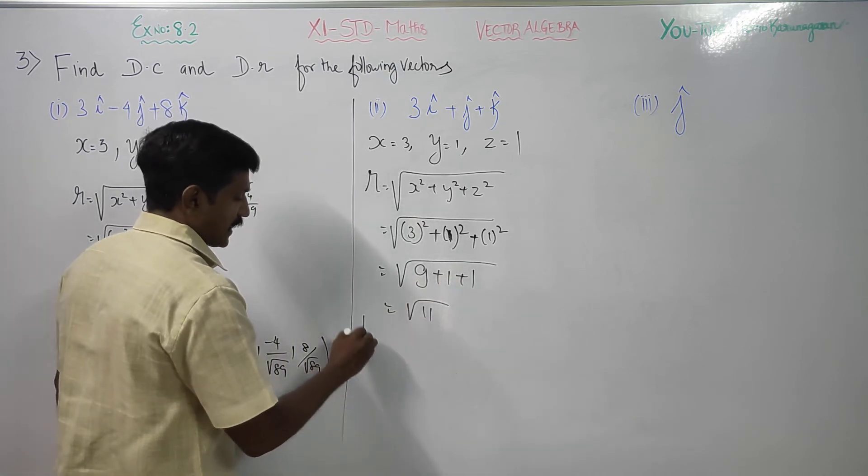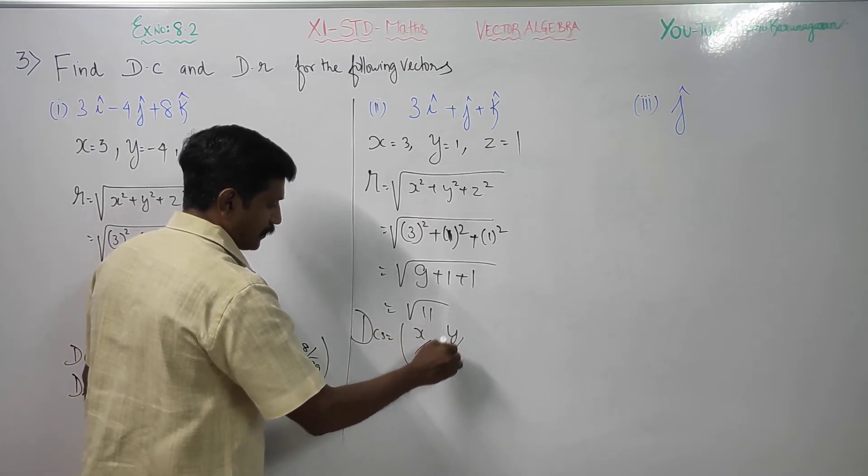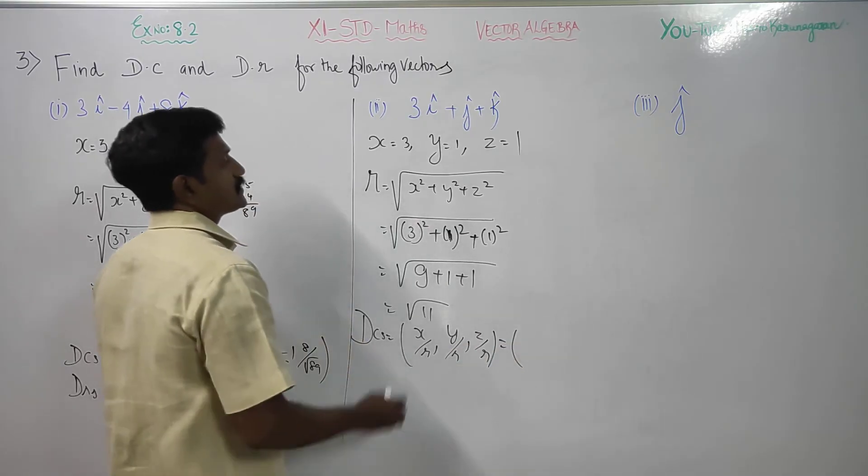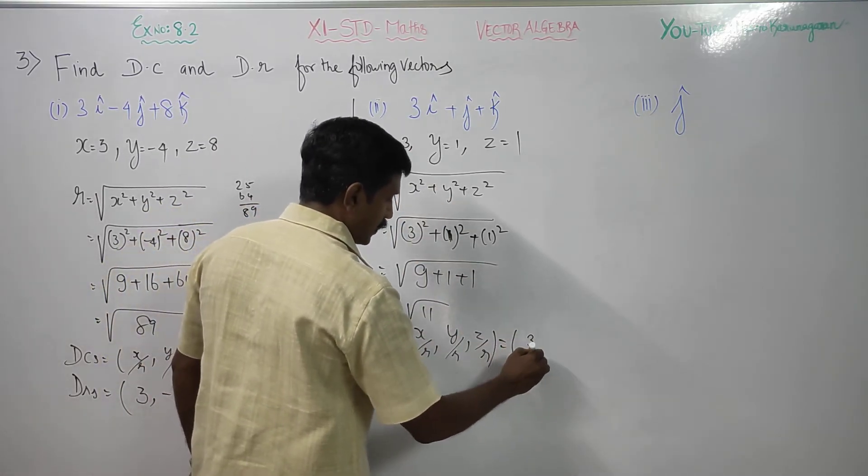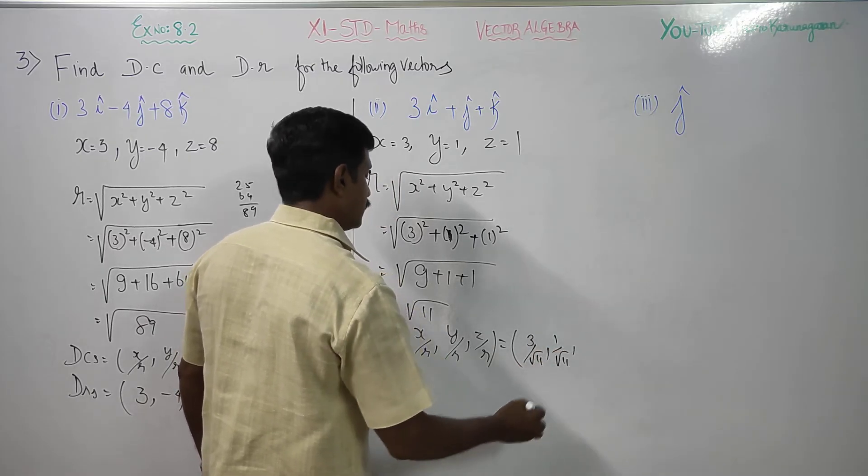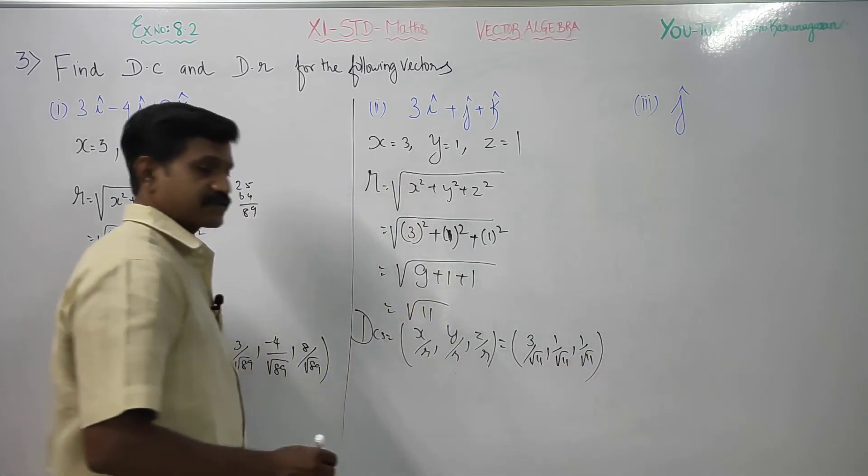What is my direction cosines? x by r, y by r, z by r. That is 3 by root 11, comma, 1 by root 11 and again 1 by root 11. This is my direction cosines.